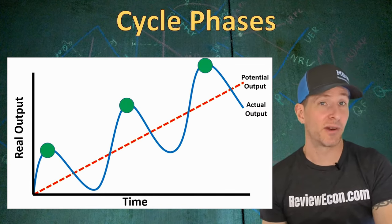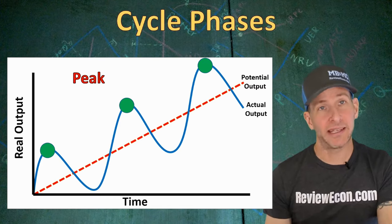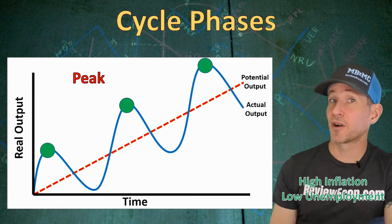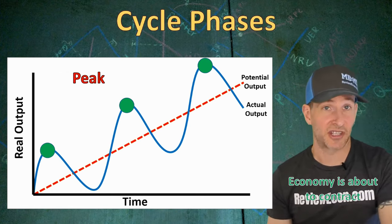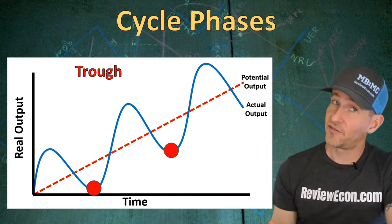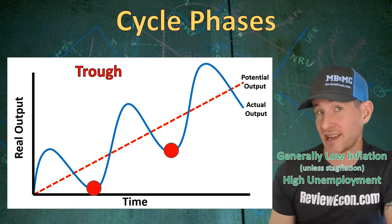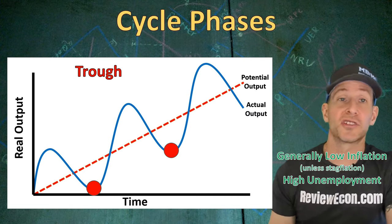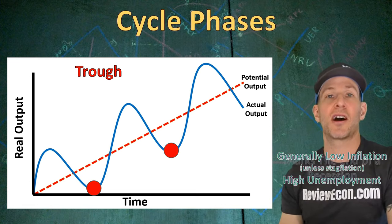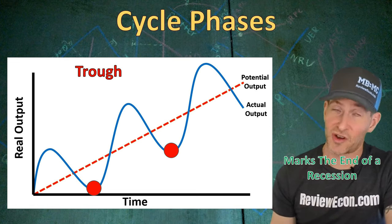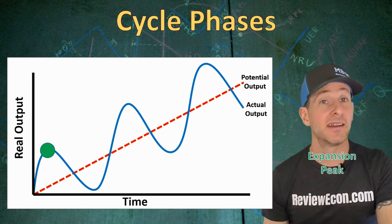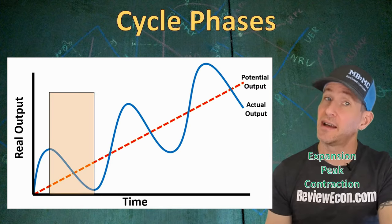There are two more phases of the business cycle. The high points of the cycle are called the peak. When the economy reaches its peak, we tend to have high inflation and low unemployment, but the peak marks the end of expansion — a contraction follows next. The low point of the business cycle is called the trough. At the economic trough, inflation is generally quite low — unless we have stagflation, which you'll learn about in future units — and unemployment is high because GDP and national income are low. The trough marks the end of an economic recession or contraction.